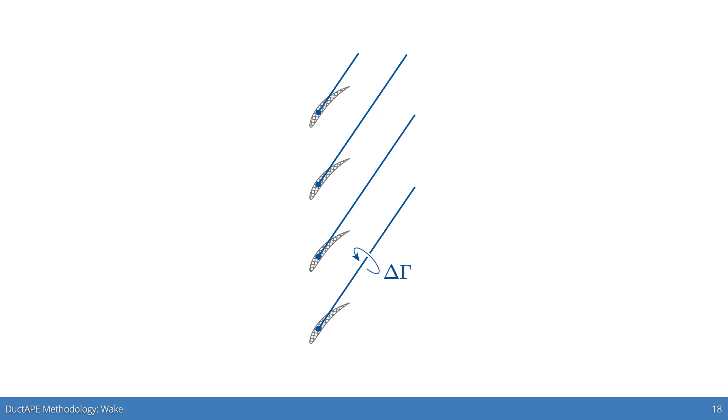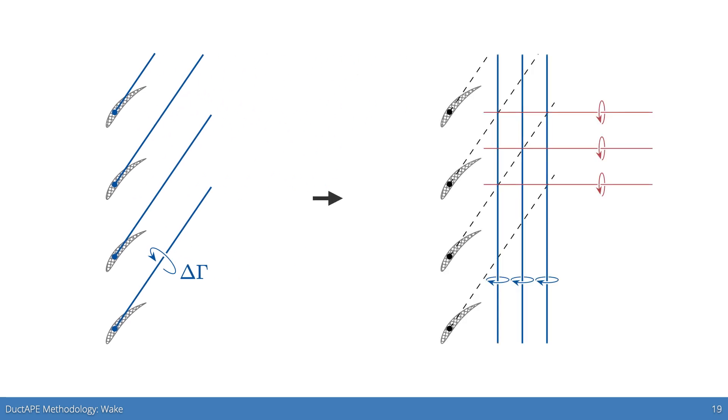For the wake, one might model a set of vortex filaments shed from the blade elements. In duct tape, we smear such vortex filaments into axisymmetric vortex sheets that satisfy a force-free wake condition. Then we discretize those sheets into vortex bands like those used to define the bodies.